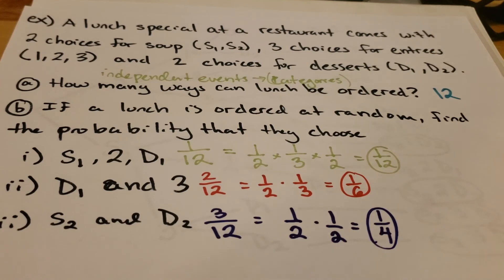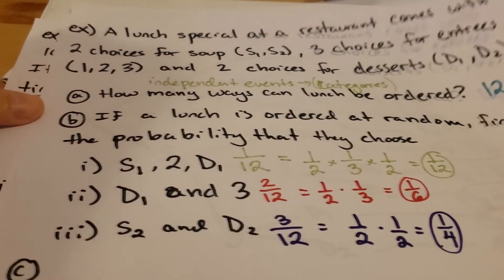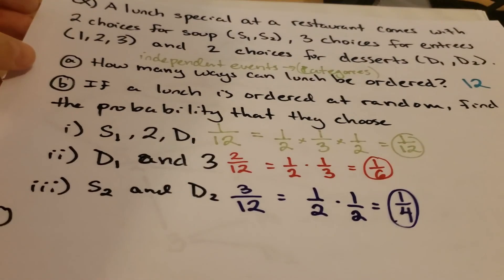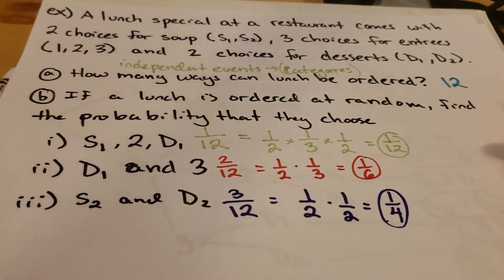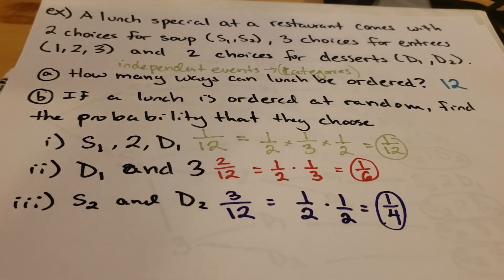If this were a normal semester and I gave you a problem like this on an exam, I would not care which method you use to solve it. If you wanted to solve it using a tree diagram, you're welcome to do that. If you wanted to use the multiplication rule and treat them as independent events, you could also do it that way. So if problems like this come up on future homework assignments and you're not given directions on how to solve them, do whichever method you prefer — whichever you find easier.